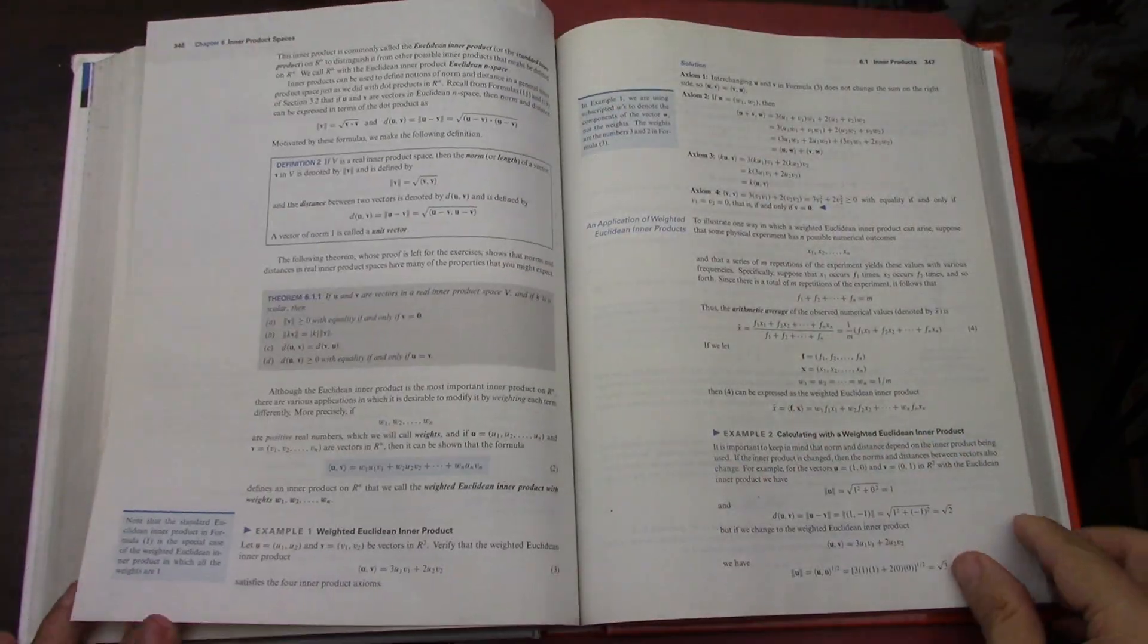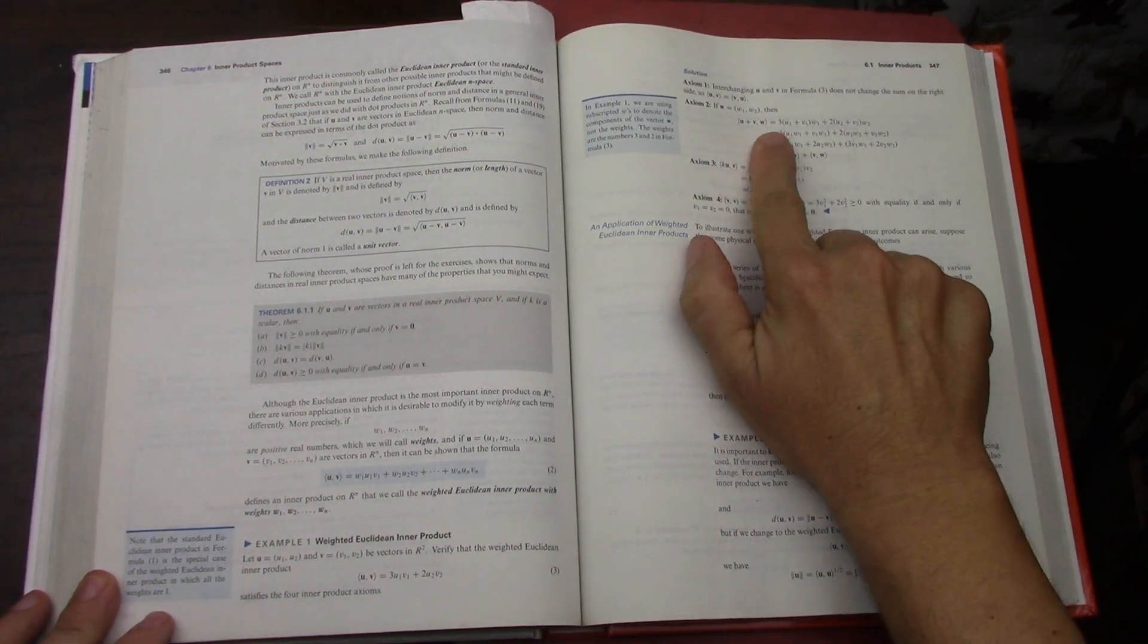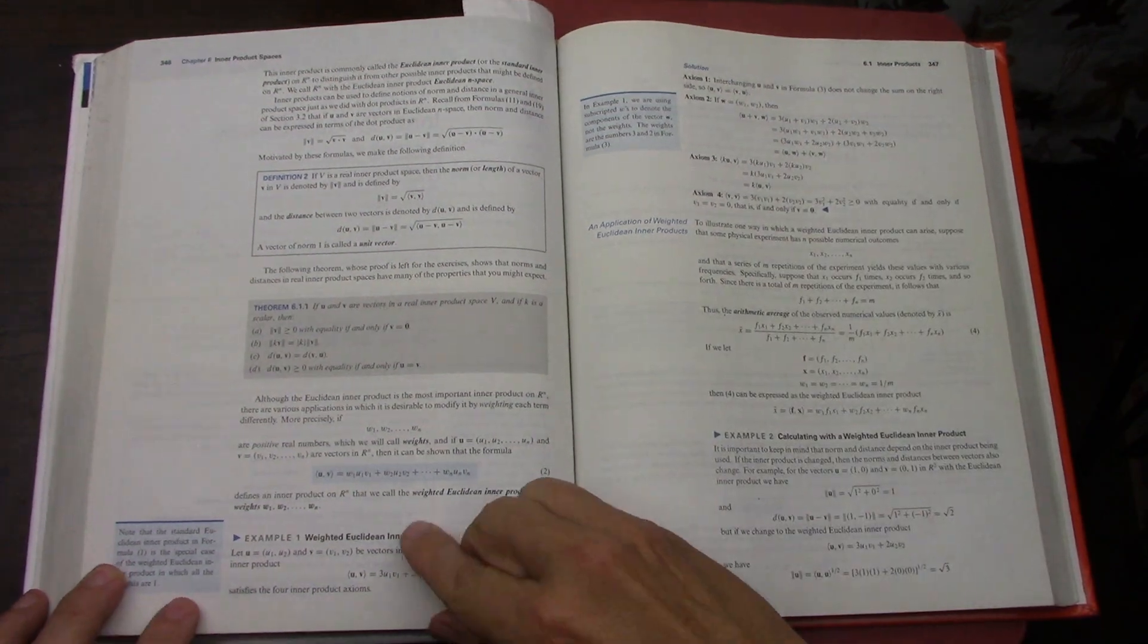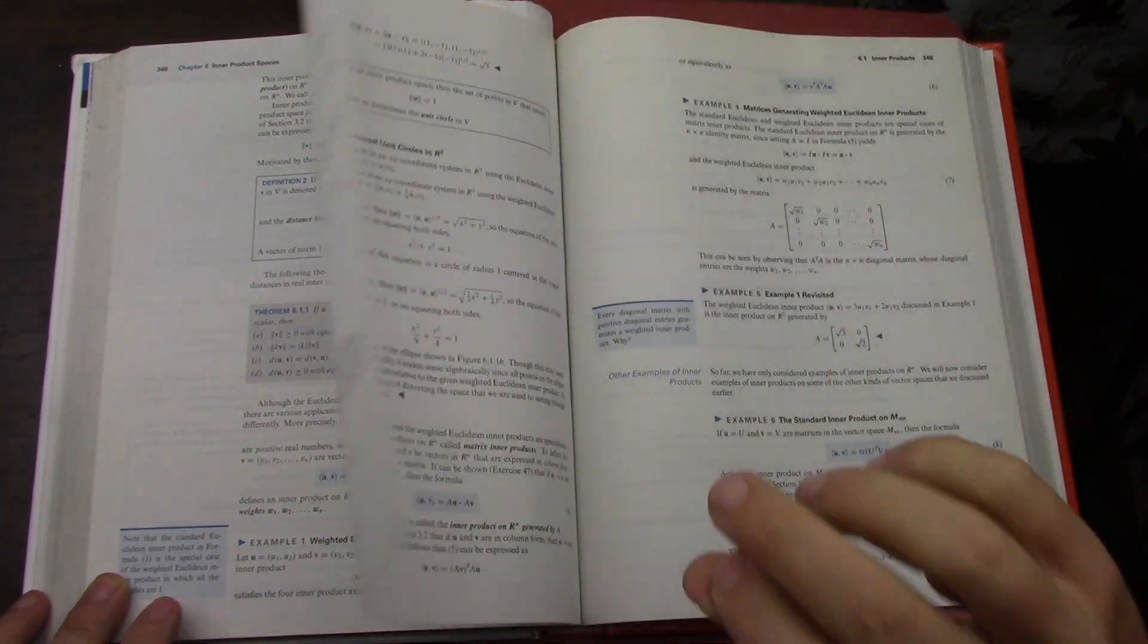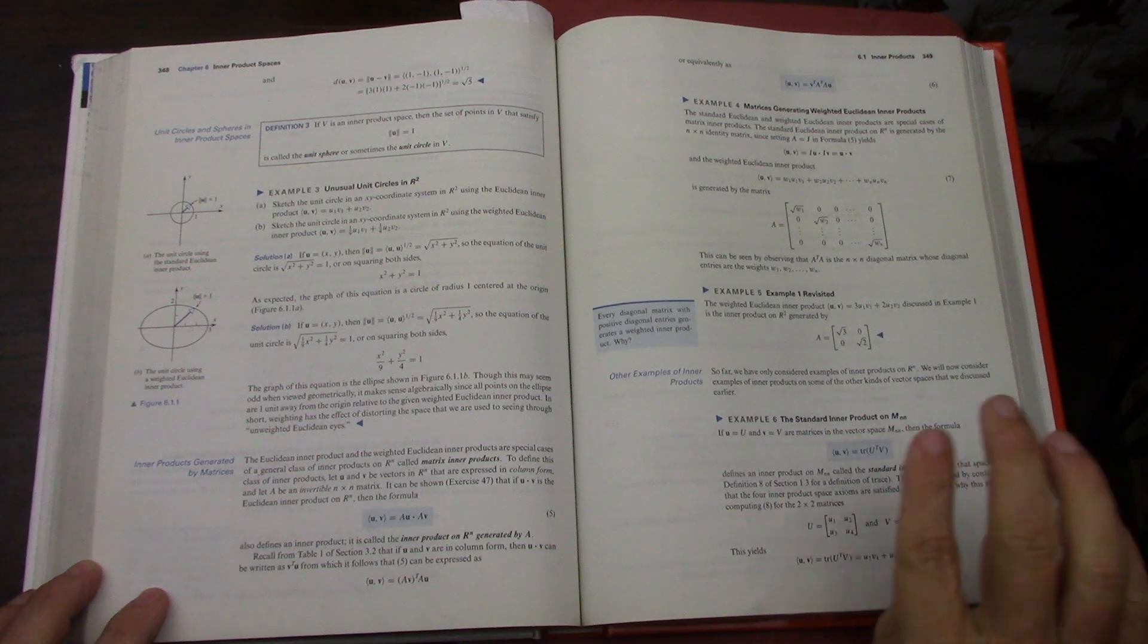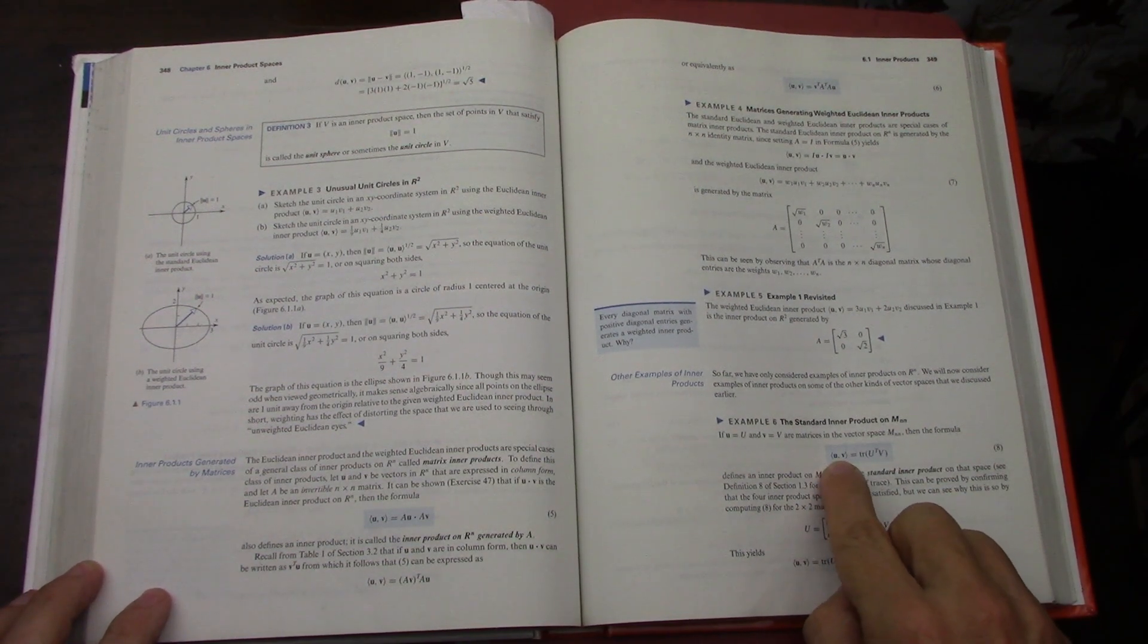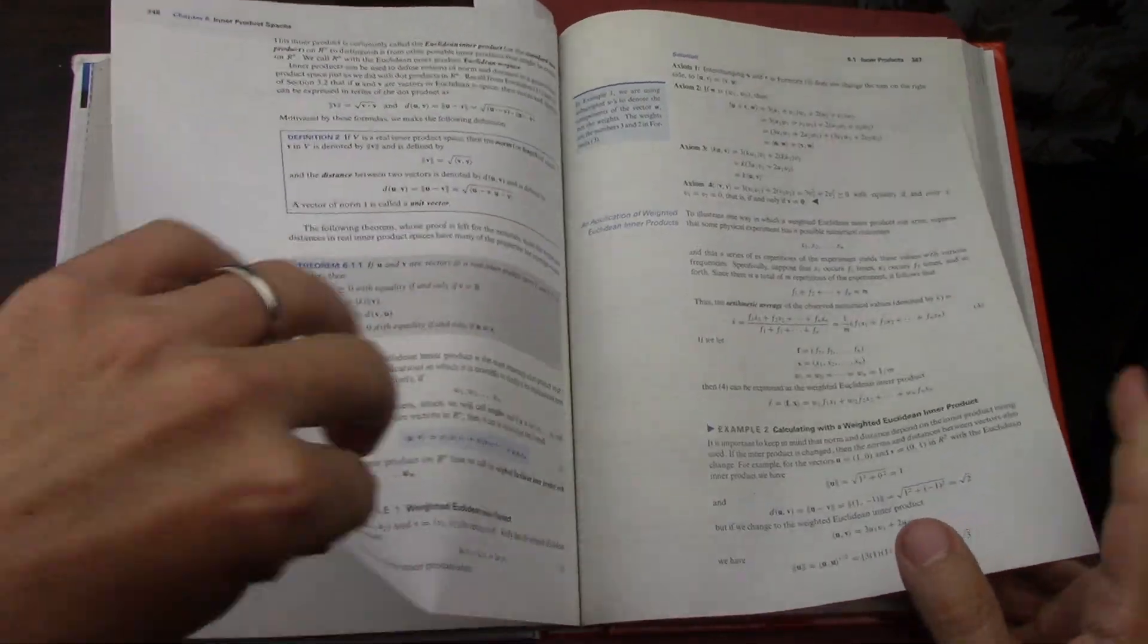When they're weighted you have to put numbers in front of the product for the weights. And when you're using matrices, you really have to do the trace for it to be the correct term—the inner product.